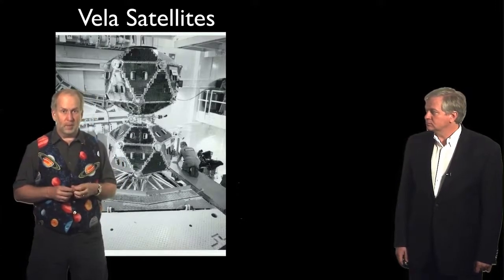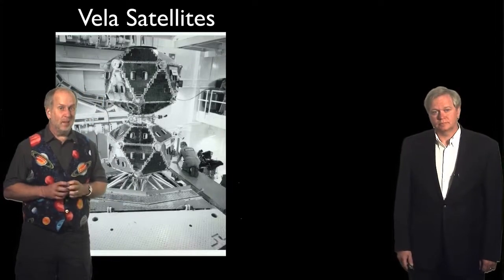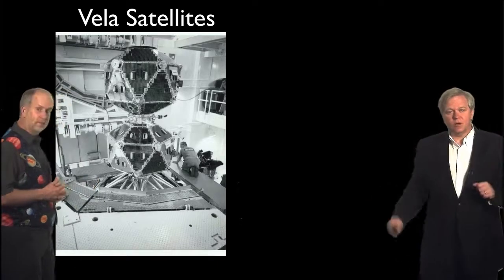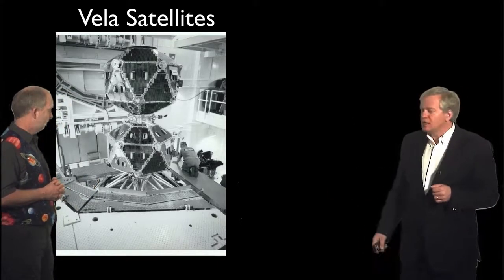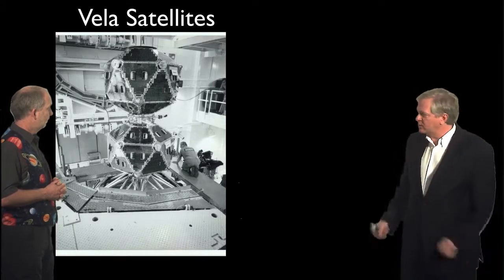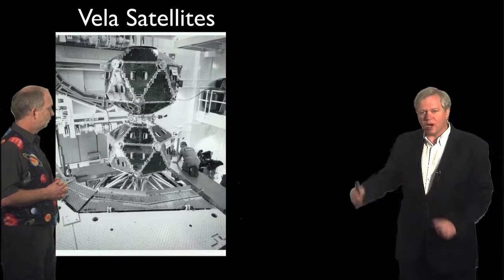So, the Americans decided to build some satellites to make sure the Russians weren't illicitly testing nuclear bombs in the atmosphere. These satellites were launched in the 60s, mainly. They were called the Vela satellites. And you can see two of them here. They actually were launched two at a time, and they would come apart, so there's a top and a bottom here. This is on the top of a rocket that's going to be launched.